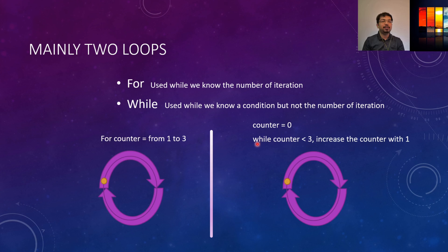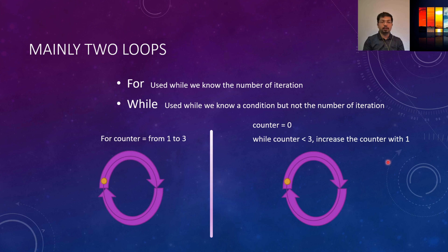That is how we can use for and while. These are two similar things, but we've demonstrated how to use similar conditions for both the for and while loops. Now we'll see what the while loop and for loop can do.